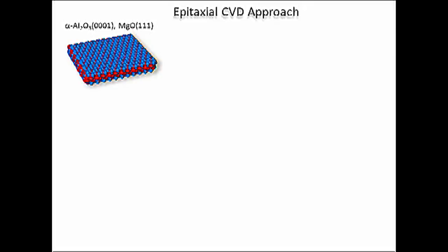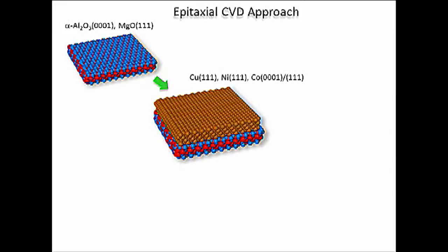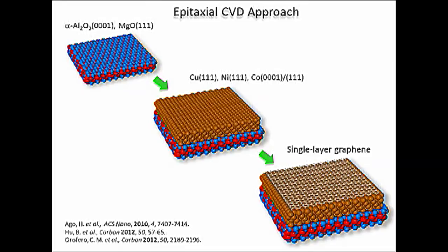This is our novel approach. We use single crystalline metal oxides and deposit crystalline metal film by sputtering. These metal films are applied to epitaxial CVD growth of graphene. This approach enables us to control the orientation of graphene hexagons.